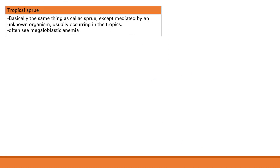Next is tropical sprue, also called sprue like celiac sprue. It is essentially the same condition, but mediated by an unknown organism and typically found in tropical regions. It can also present with megaloblastic anemia due to impaired folate or vitamin B12 absorption. Treatment is antibiotics to address the causative organism.